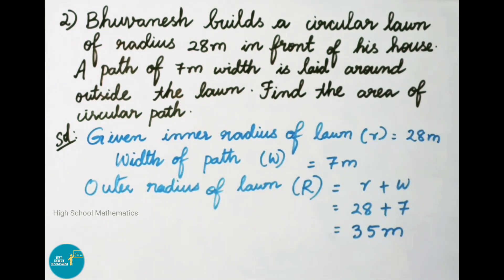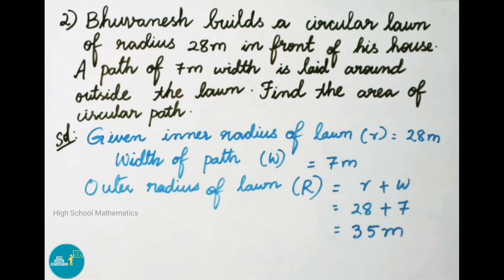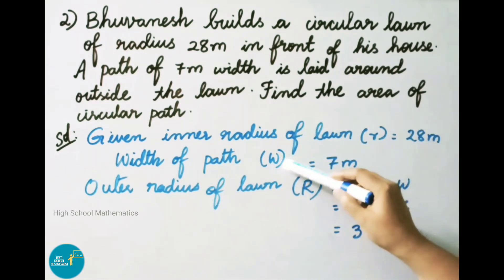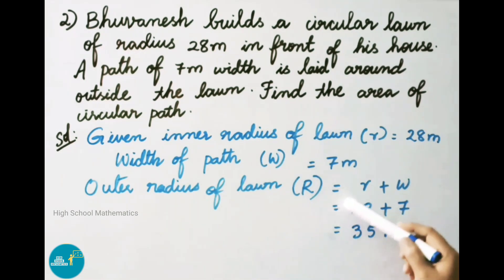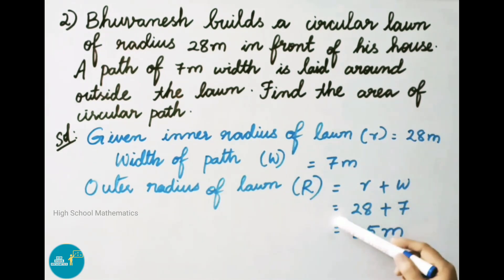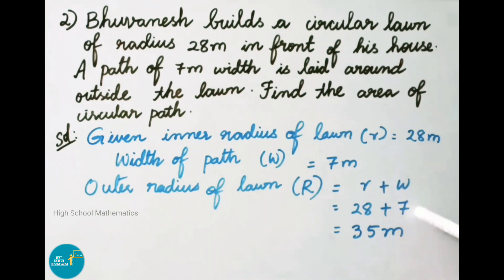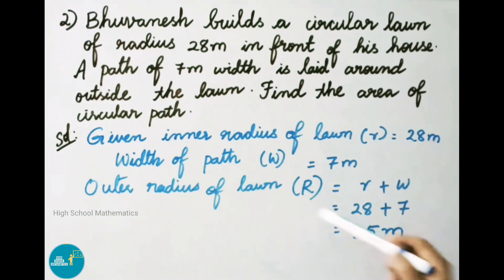Now we find the outer radius of the lawn, capital R = inner radius + width of path = r + w = 28 + 7 = 35 meters. Therefore, outer radius of lawn is 35 meters.